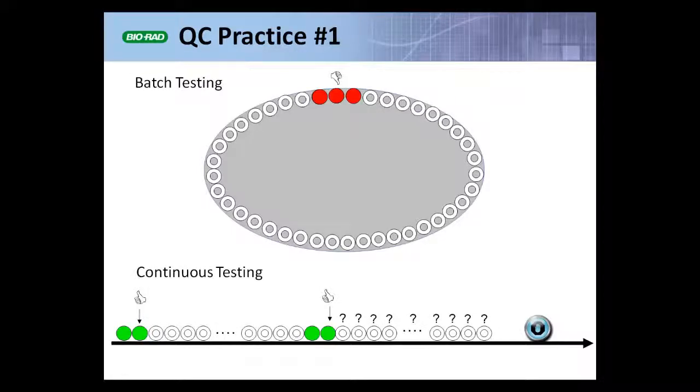In the modern continuous flow testing paradigm, we lose this natural association between QC results and patient results. When we test QCs, we're making an assessment of the state of the testing process at that point in time. Is the process working as intended or not?